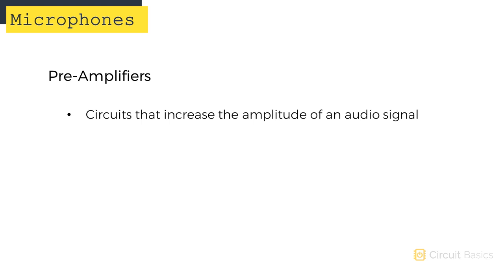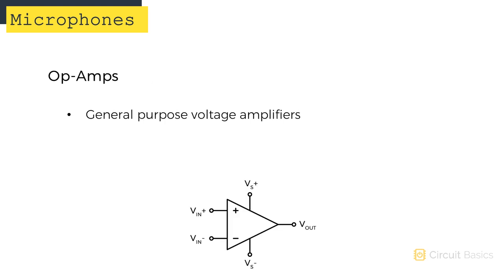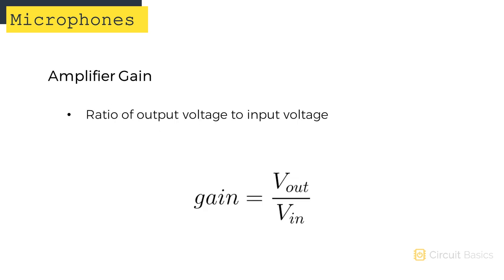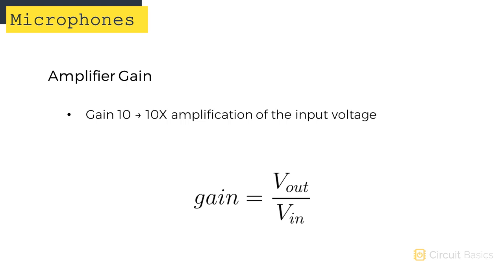A pre-amplifier is a circuit that increases or amplifies a weak audio signal into a stronger one. One way to make a pre-amplifier is with one or more operational amplifiers, or op amps for short. Op amps are general purpose voltage amplifiers - they take a low voltage input signal and output a high voltage signal. One important aspect of op amps is the concept of gain. Gain is the level of amplification performed by the amplifier - it's the ratio of the output voltage to the input voltage. A gain of 1 results in no amplification, a gain of 10 results in a 10-fold amplification, and gains are usually set anywhere from 1 up to about 100x.